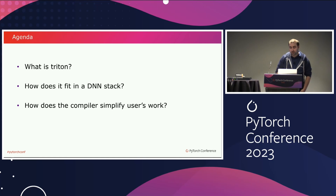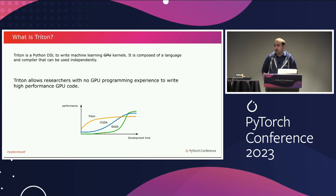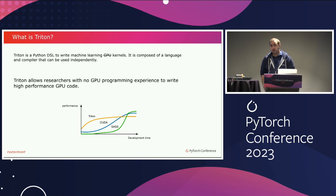So what is Triton? Triton is a Python DSL meant to be used to write machine learning kernels. Originally it was strictly used for GPU kernels, but it is slowly growing to support any kind of hardware used for machine learning.